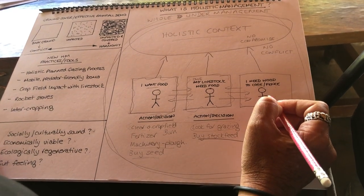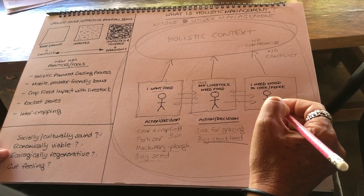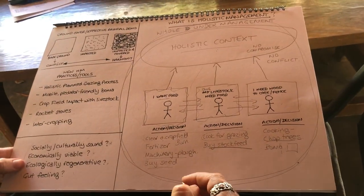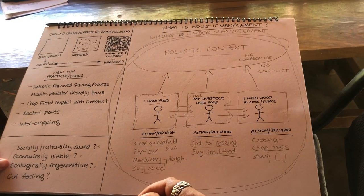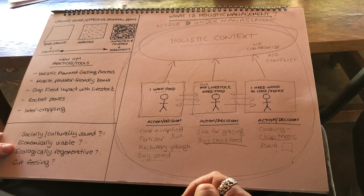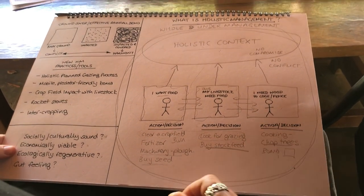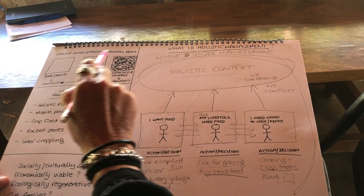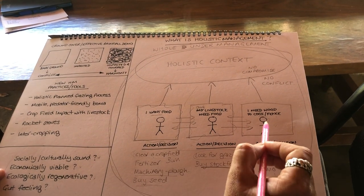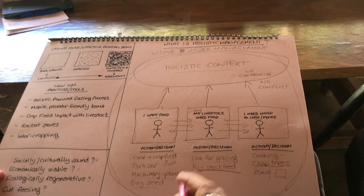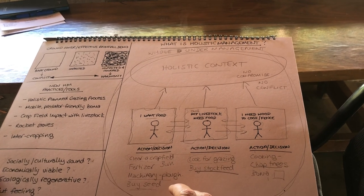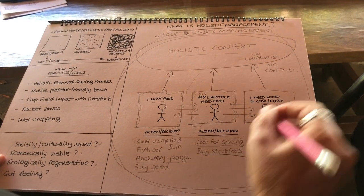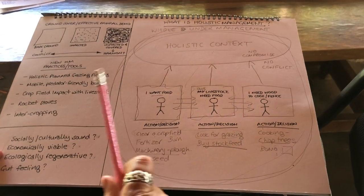Say this person needs money. With bare ground and conflict, they might turn to poaching — they've got no cattle to sell, their crops aren't growing because their soils are dying. But you're stopping all those knock-on actions and effects, and creating this new reality: if a community has healthy livestock, healthy crops, plenty of food, clean water in their rivers, and they're not in conflict with wildlife, you're going to see a very different picture. That is what holistic management is.